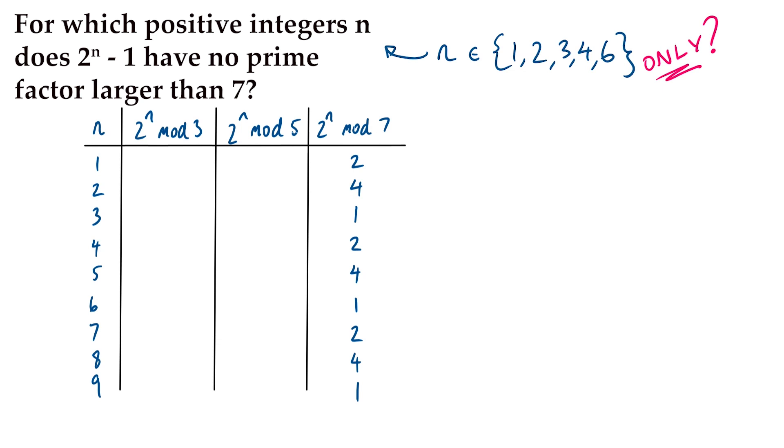So, if we complete a table like this and 2 to the n mod 3 just goes 2, 1, 2, 1, 2, 1, etc. 2 to the n mod 5 goes in cycles of 4, 2, 4, 3, 1, 2, 4, 3, 1. And we're interested in the position of the 1s in the table. For example, if 2 to the n mod 3 is 1, then 2 to the n minus 1 would be divisible by 3. That will happen whenever n is even. We can notice that there's some rows with no 1s, meaning that 2 to the n minus 1 would not be divisible by 3, 5, or 7. And that's going to occur in any of these rows that are odd and not a multiple of 3.